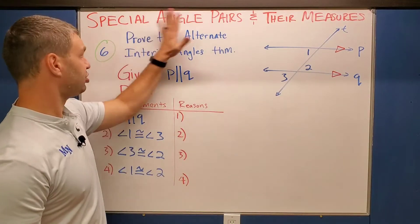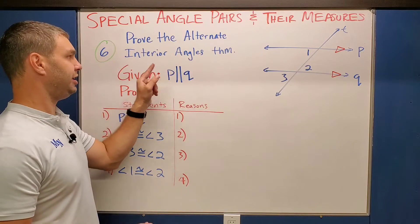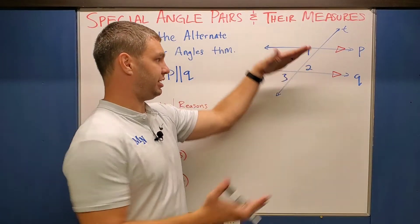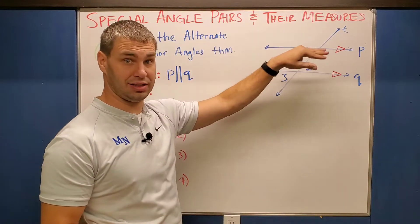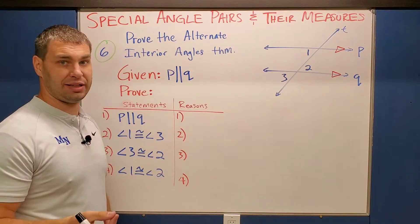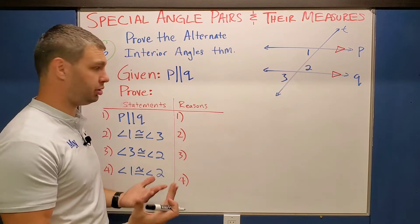Here we have a proof in our special angle pairs and their measures section, asking us to prove the alternate interior angles theorem. Remember, alternate interior angles are the two angles on the inside of our two parallel lines, and they are going to be congruent. We're going to show you why that's actually true in this proof.